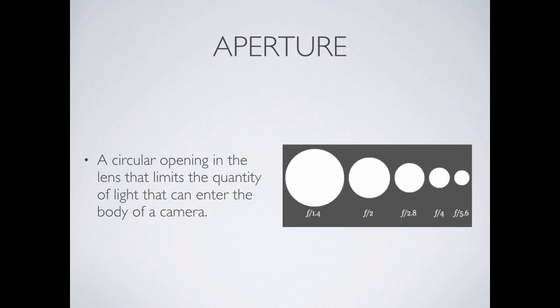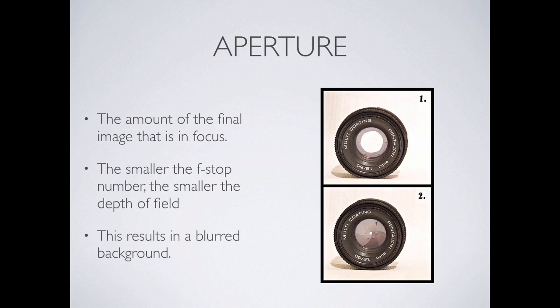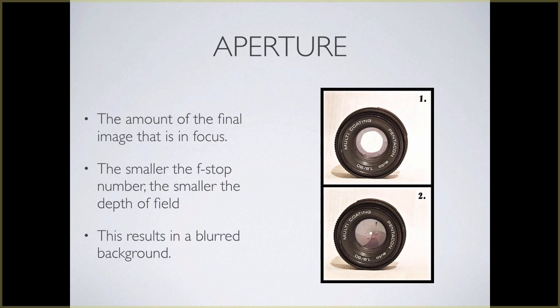Then we move on to something called aperture. This controls a lot of what the photo looks like, but fundamentally it's about how much light can physically get into the camera body. It's the opening in the lens that limits how much light gets in. Depending on the aperture, we could end up with a very large hole in the center of the lens that lets a lot of light in, or a little tiny hole that lets a small amount of light in.